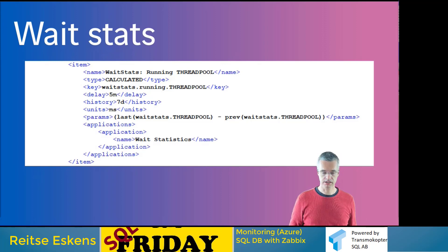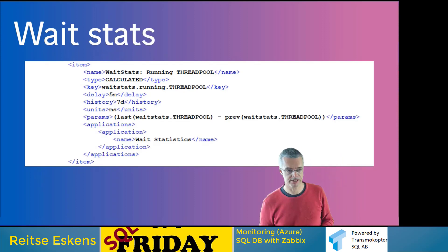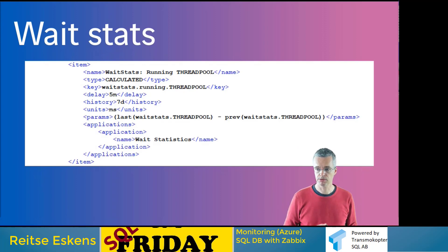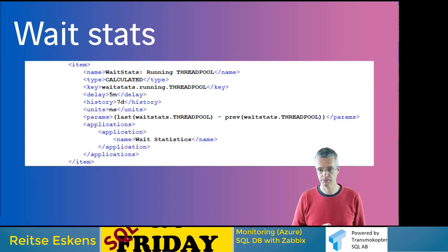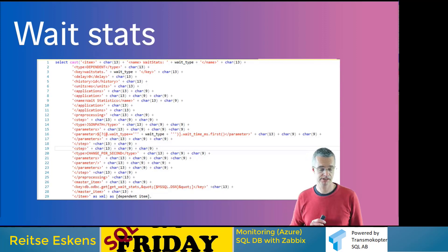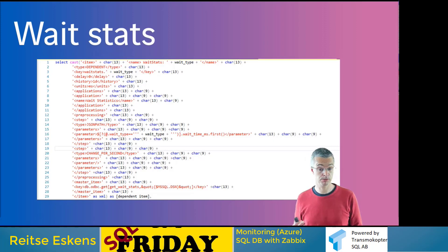When creating custom templates, don't use the GUI — you'll end up frustrated with repetitive strain. Script it and create an XML file, because Zabbix ultimately stores everything as XML. I have about 270 wait type items. I didn't type all of them — I ran a query on the database to generate the XML automatically, based on the wait types available in that version. SQL Server 2008 had fewer wait types than 2019, and 2022 will likely have even more.